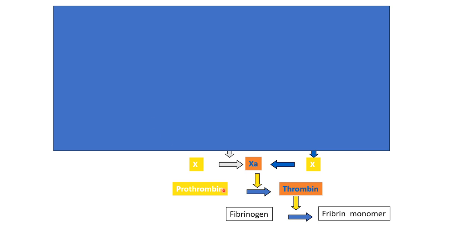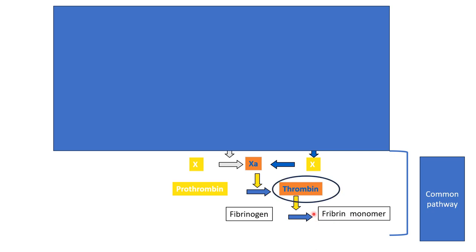After this sequence, the common pathway is activated. Both the extrinsic and intrinsic pathways activate factor 10. Factor 10a is activated and acts on prothrombin, converting it into thrombin. Thrombin then acts on fibrinogen, converting it into fibrin, forming the insoluble fibrin clot.